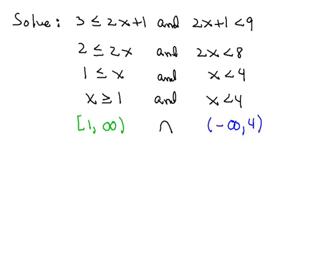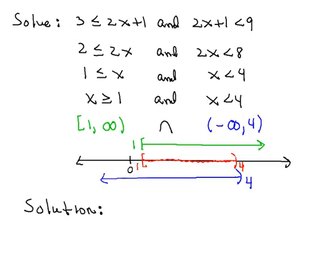So now we'll graph each of those with respect to the number line. Now you'll see each of those intervals graphed below. And I think you'll agree that the interval where they overlap would be between 1 and 4, including the 1, but not the 4. And so you'll see that is graphed in red there on the number line itself.